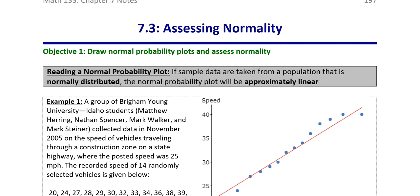Or excuse me, the dataset came from a population that was approximately normal. If they do not follow that linear path, then they're not approximately normal, at least as far as we can discern.